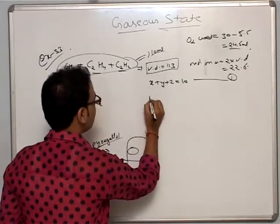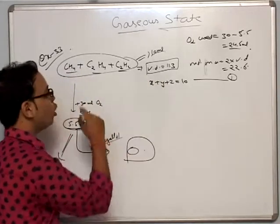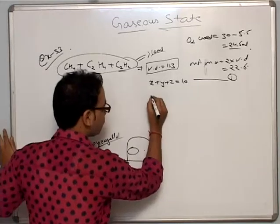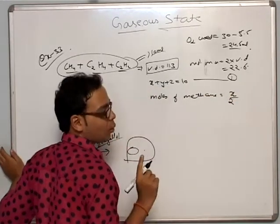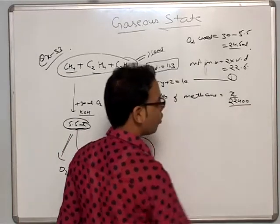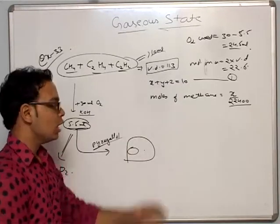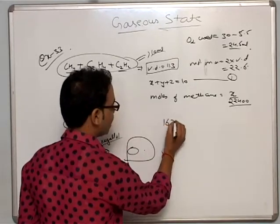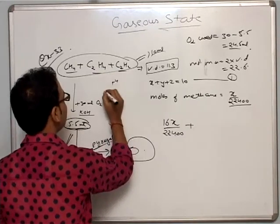The weight equals molecular weight times number of moles, and number of moles equals volume divided by 22400 (the molar volume in ml). So x ml of methane gives x/22400 moles. Similarly, y/22400 and z/22400 moles. We multiply by molecular mass to get weight. So: 16x/22400 plus — the molecular mass of C2H4 is 2×12 + 4 = 28 — 28y/22400.